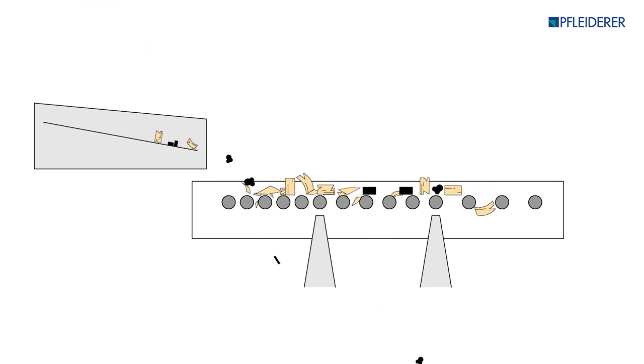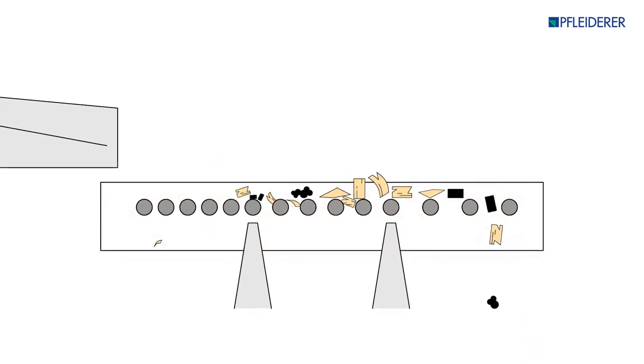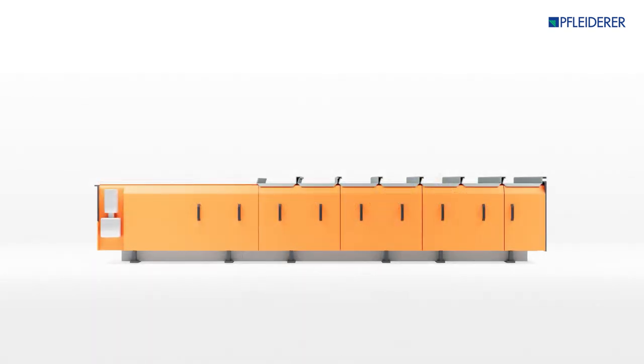By means of an ingenious cascade process, the resulting coarse pieces of shredded wood are treated and turned into a high-quality wood chip material.